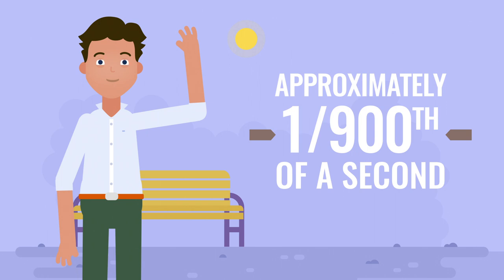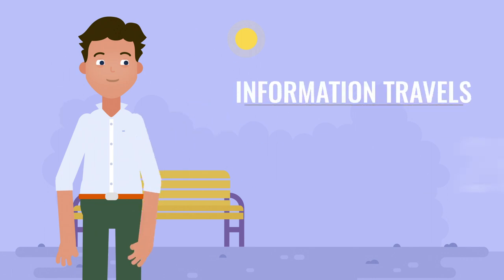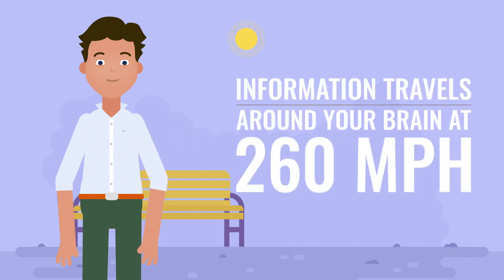you had the thought creating an impulse, which traveled from your brain to your spinal cord and electrically fired neurons in your muscles and tendons to raise your hand. That's all possible because information travels around your brain at approximately 260 miles per hour.